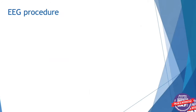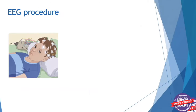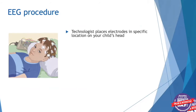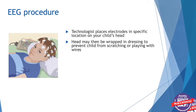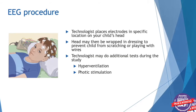EEGs are usually performed by technologists, who will place electrodes in specific locations on your child's head — stickers in the locations detailed on the schematic. The head may be wrapped in a dressing to prevent the child from scratching or playing with the wires, which can interfere with the recording. The technologist may also do additional tests such as hyperventilation, where we have the child breathe fast and heavy, or photic stimulation, where we flash bright lights and look at brain activity in response.